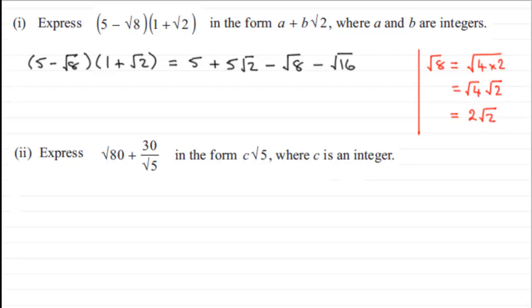Okay, so then I can substitute this value into here. So what we've got then is 5 plus the 5 root 2. Now for the minus root 8, I've just got to write that as minus 2 root 2, and for root 16, well that's an exact value, 4, so we've got here minus 4.